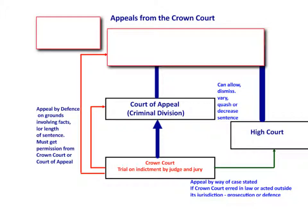The other alternative appeal from the Crown Court is to the High Court by way of case stated. This appeal can be made by either the prosecution or the defence if they think that the Crown Court either got the law wrong or acted outside their jurisdiction. That appeal goes to the Queen's Bench Division of the High Court in exactly the same way as case stated appeals from the Magistrates' Court.